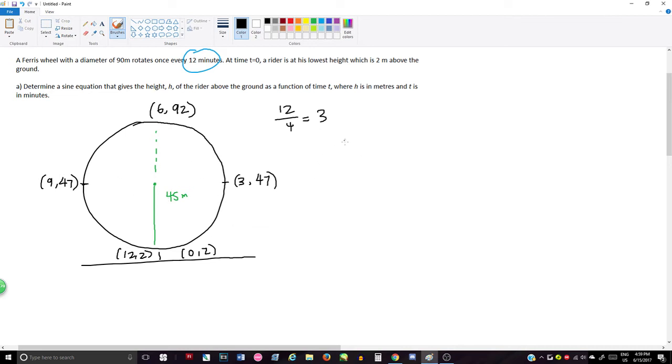So now that we have our information laid out like this, we can make a sine graph. And this can help us with the equation later on. So we want to take our x values, which is our time, and put them on the bottom here. So we can have 3, well this would be 0, 3, 6, 9, and 12. And we want to take our y values, which is our height at the time, and put them here.